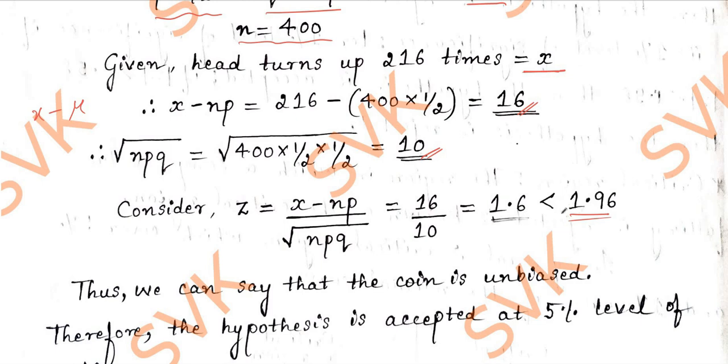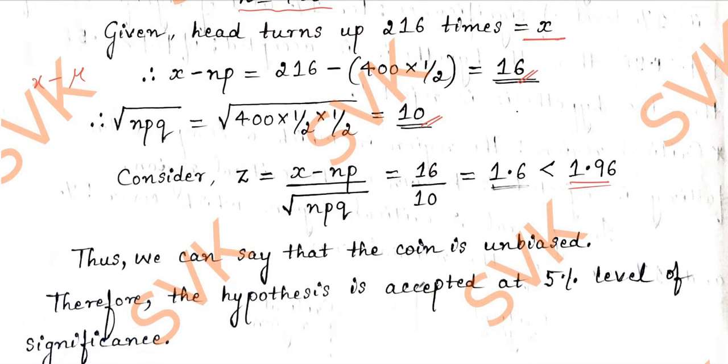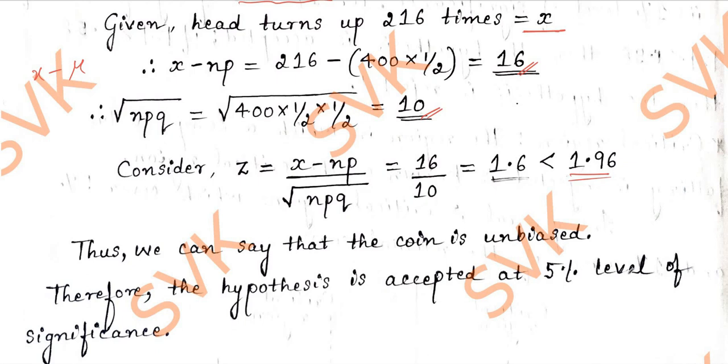Therefore, as the value is less than 1.96, thus we can conclude that the coin is unbiased. Therefore, the hypothesis is accepted at 5% level of significance.